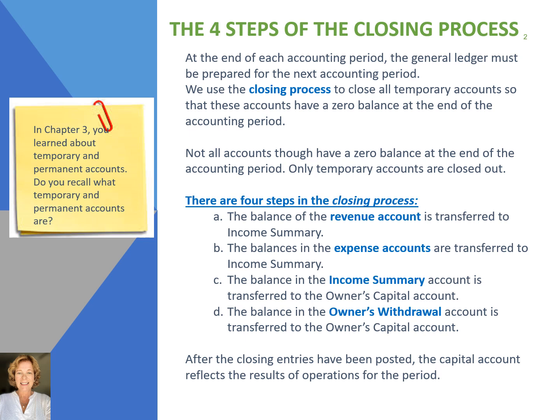So what are those four steps? First, we'll close all of the revenue accounts and those income statement accounts that have credits to an account called income summary. Step 2 is to close all expense accounts and all other income statement accounts with debits to income summary. We close the income summary account to the capital account, and then we close the owner's withdrawals and dividends to the capital account as well. After the closing entries have been posted, the capital account reflects the results of the operations for the period.